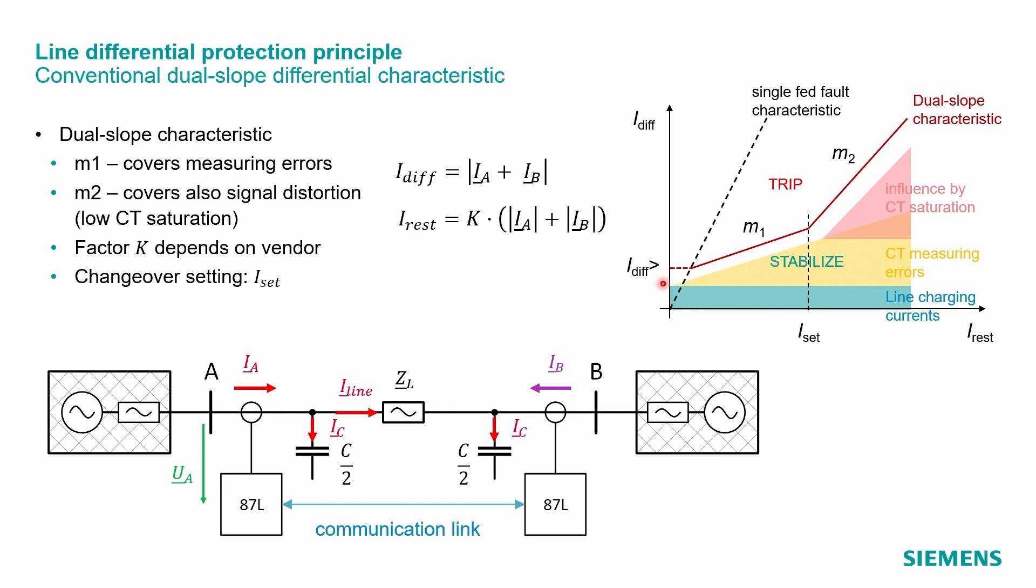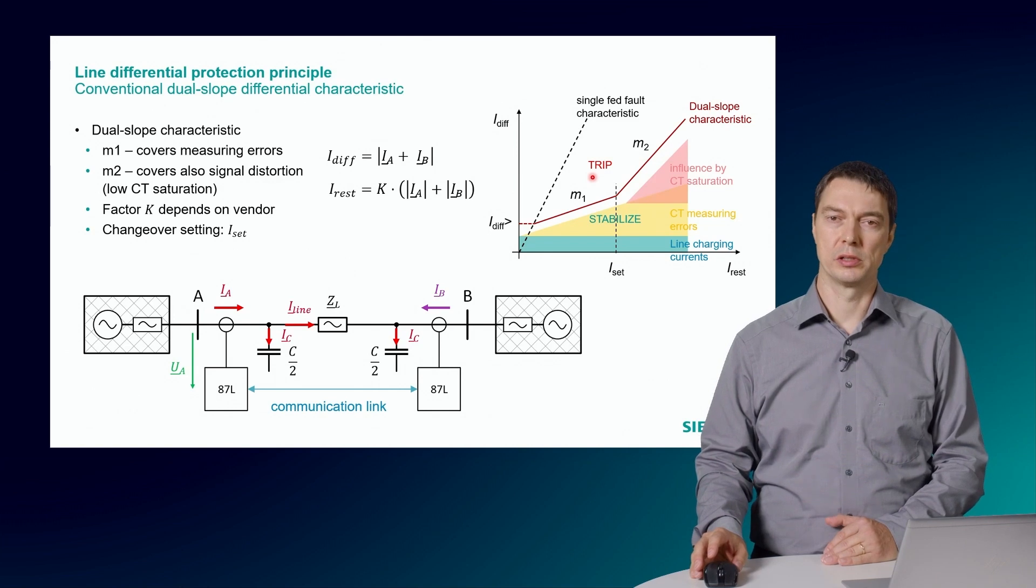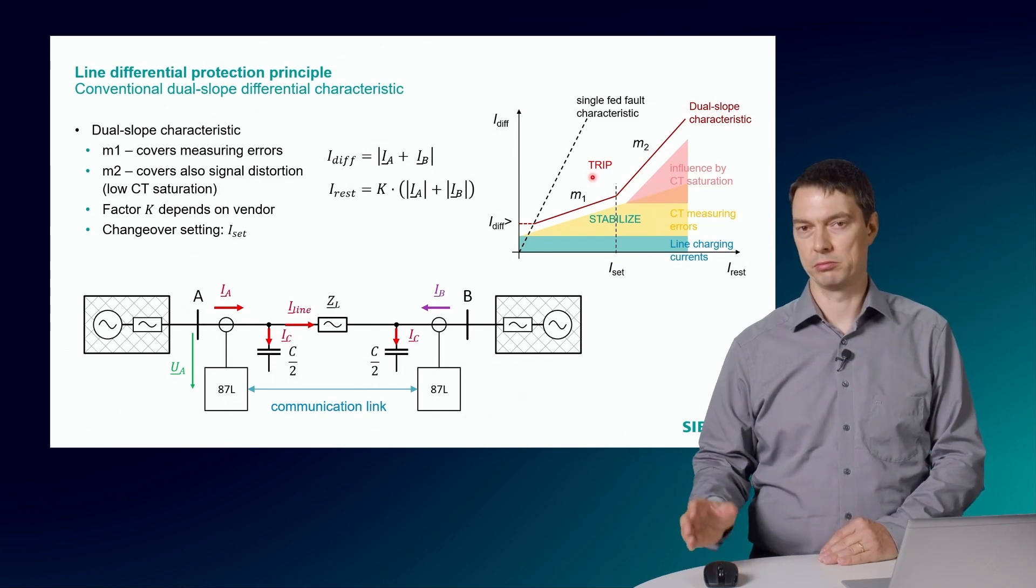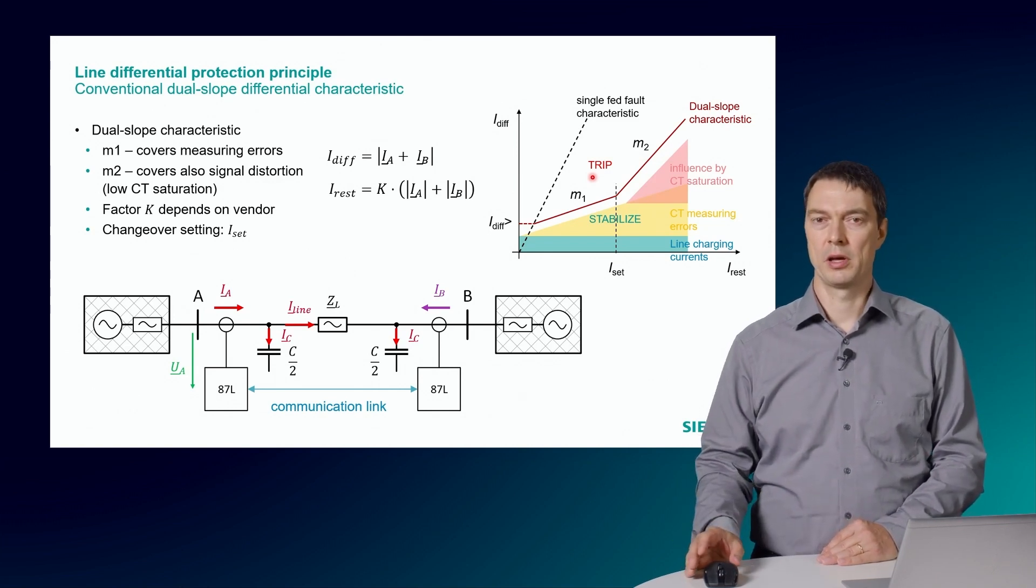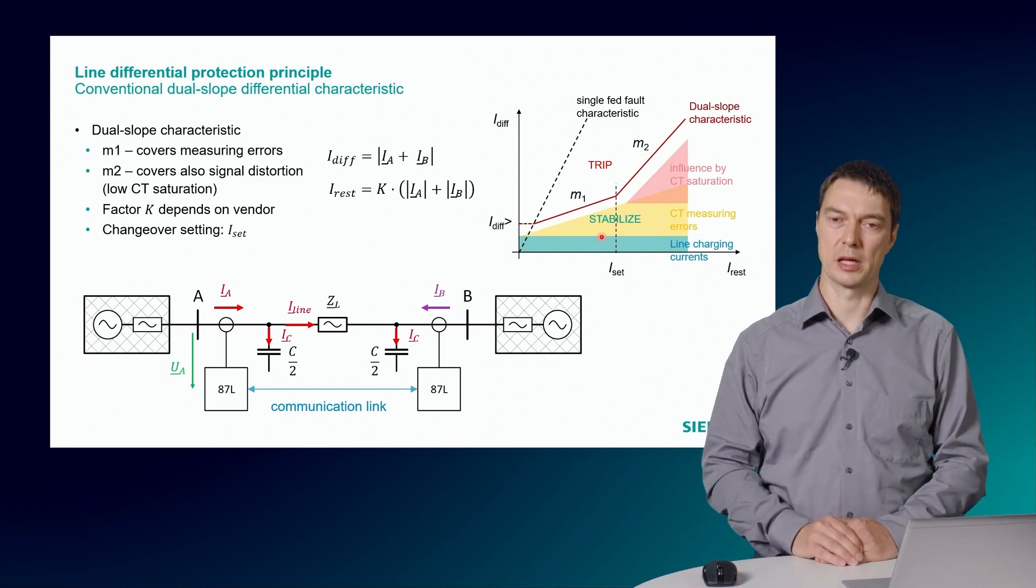The restraining current is calculated as the sum of the absolute current value scaled by a vendor-specific scalar value K. For example, K equals one-half is a typical value. A differential current seen above the characteristic will trip the circuit breaker. And below the characteristic the relay will stabilize and be stable.